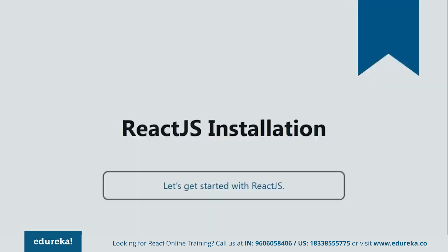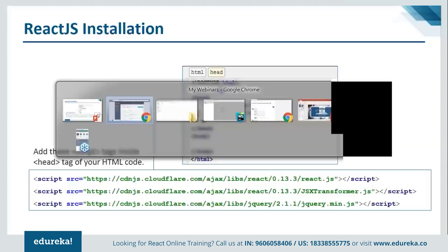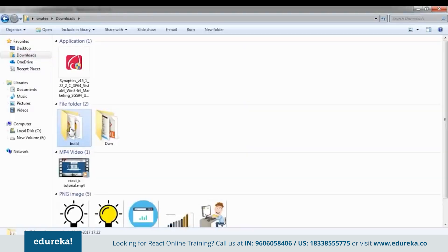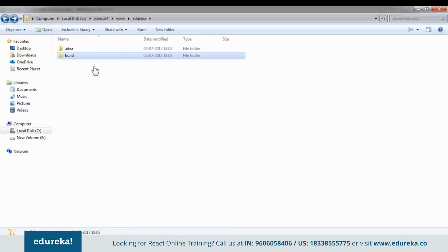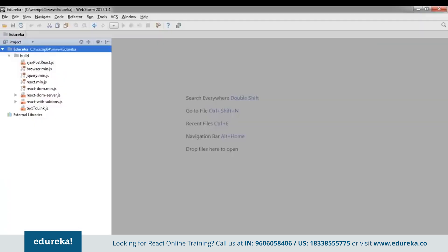Installing React.js is very easy. You just need to add the React.js dependencies to your code and then you are good to go. You can add these dependencies either directly from online repositories or download them and add them to your project folder. As you can see from this code, I have added the dependencies from online repositories. Let me show you how to add them after downloading. I'll go to my project folder, and inside this I'll paste all my dependencies. I go to my downloads where I've already downloaded the dependencies, copy them, go back to my project folder, and paste them there.